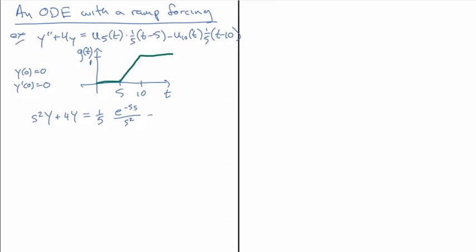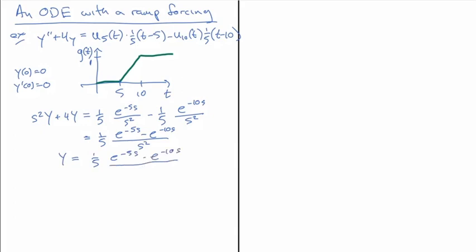Then we subtract another (1/5) e to the minus 10s divided by s squared. There are common terms, so we pull those out: (1/5) times (e to the minus 5s minus e to the minus 10s) all divided by s squared. Solving for Y, we get (1/5)(e to the minus 5s minus e to the minus 10s) divided by s squared times (s squared plus 4). The denominator — note that s squared plus 4 doesn't factor over the real numbers, so we'll need a partial fraction decomposition, and we expect to see cosines and sines in our solution.